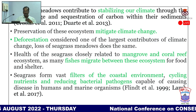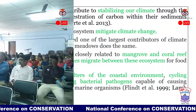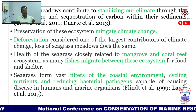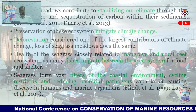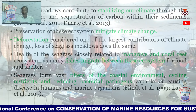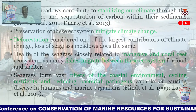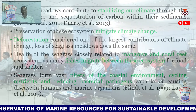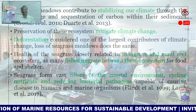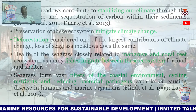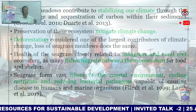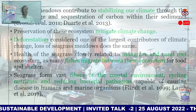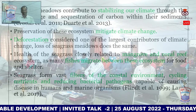Seagrass meadow loss is similar to terrestrial deforestation. Just as we plant trees to capture carbon, we have to plant seagrass to capture more carbon from the atmosphere and mitigate climate change. If there is no seagrass nearby, fish resources move to mangrove areas or coral reefs. Seagrass meadows also filter the coastal environment, cycle nutrients, and reduce bacterial pathogens capable of infecting humans.